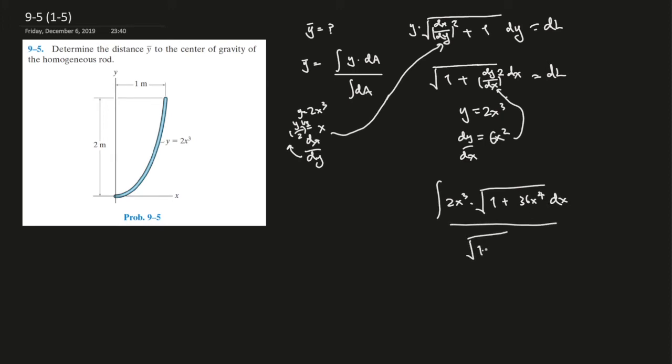And down here, square root of 1 plus 36x to the power of 4 dx. We're plugging x values to find y values. We're plugging x to see where y is—it's right here. What is the correspondence of x?